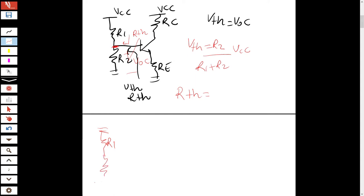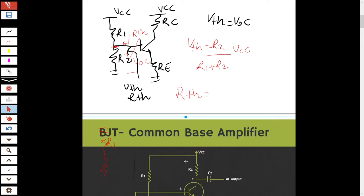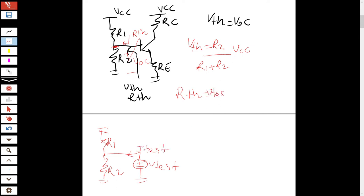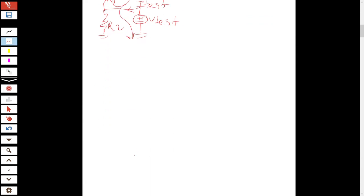Independent voltage sources are short-circuited and independent current sources are open-circuited. We then apply a test voltage V_test and R_Thevenin = V_test / I_test. The current has two paths to ground, so R_Thevenin simply equals R1 parallel R2.